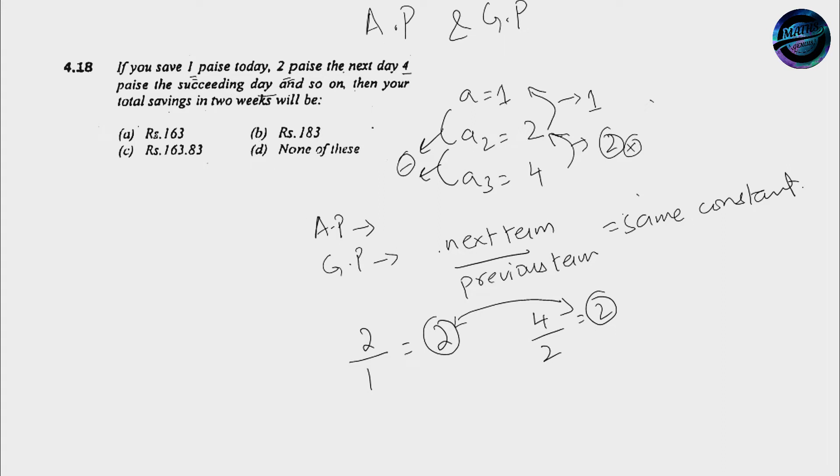Now, what we are asked. This word total is telling us that we are asked the summation of the series. Now we have to identify one more thing whether it's an infinite series or no. As it says that it's not an infinite series because we are asked 2 weeks. So 2 weeks is equal to 14 days. So Sn formula is A times R to the power n minus 1 upon R minus 1.